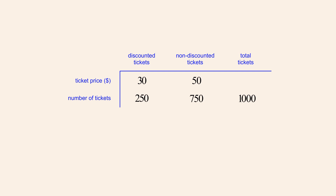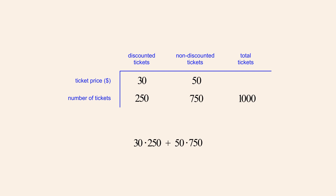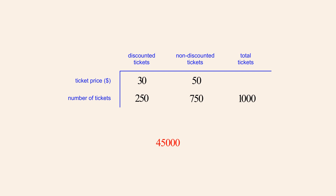We can check our calculations by multiplying the ticket price for each type of ticket times the number of tickets, and check to see if the total revenue comes to $45,000. The revenue from the discounted tickets is $30 times 250 tickets, and the revenue from the non-discounted tickets is $50 times 750 tickets. Multiplying 30 times 250 we get 7,500, and 50 times 750 is 37,500. Adding these two numbers we get 45,000. Since the total revenue from the calculated quantities is $45,000, we know that our calculations are correct.